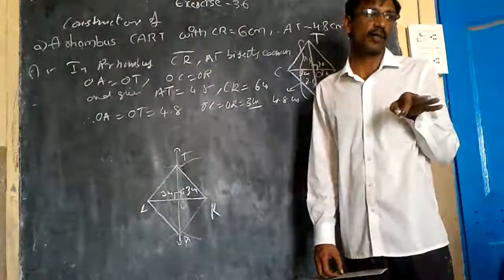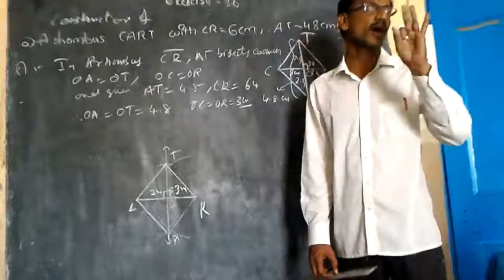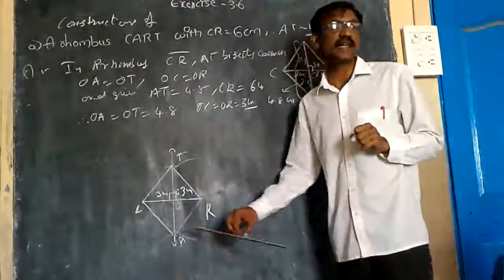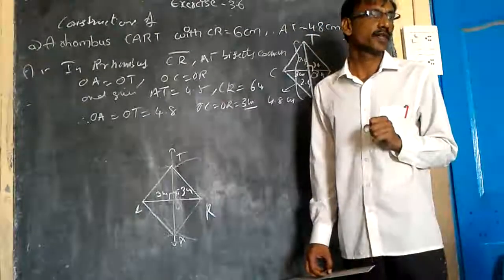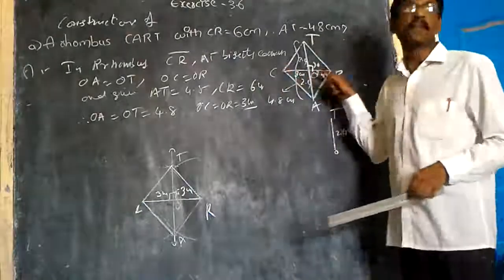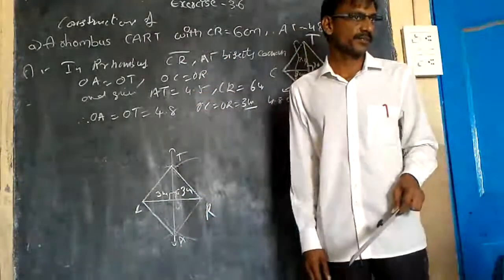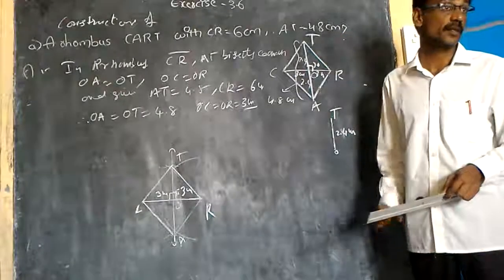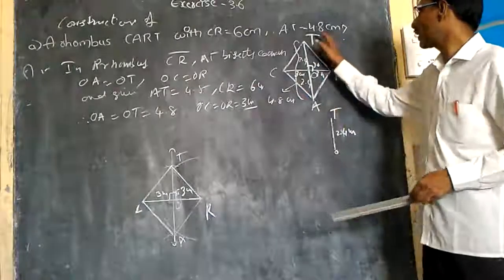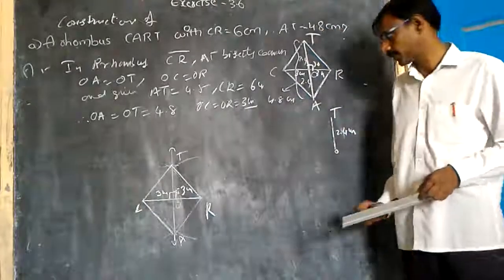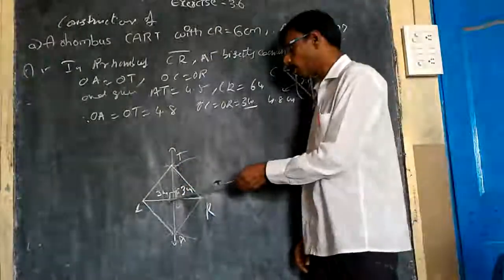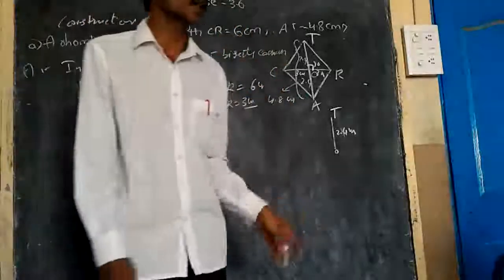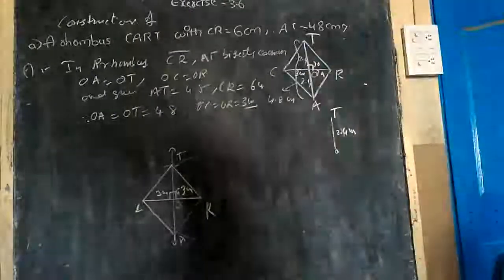If you want to construct a Rhombus, you should know a few properties of the Rhombus. All sides are equal — see, all sides are equal. The diagonals bisect each other at right angles — that is the next point. First, take one diagonal and draw a perpendicular bisector. Then, for the second diagonal, take half of its length — here I have taken half of 4.8, which is 2.4 cm. Go as the center and draw an arc on either side of the perpendicular bisector. Joining all the points, you get the Rhombus.